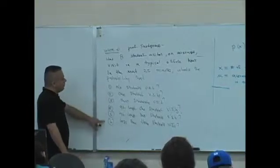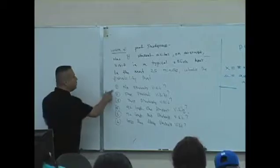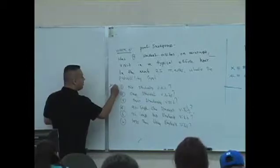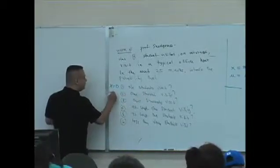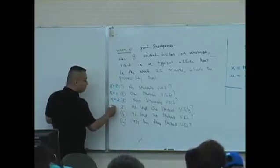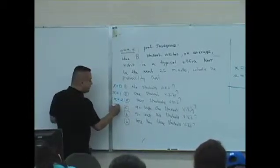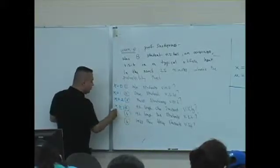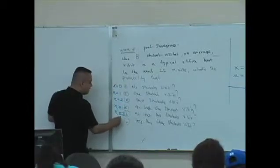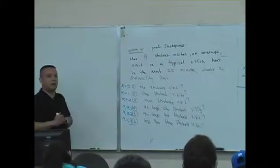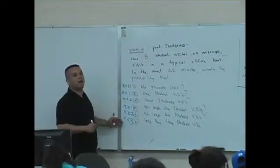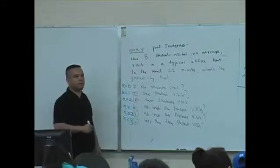So for these questions — question one — if no students arrive or no students visit, what's the value of x? What about one student arriving? Two? At least one — x is greater than or equal to one. At least two — x is greater than or equal to two. Less than three — x is less than three. So all of these phrases apply to what the value of x is.